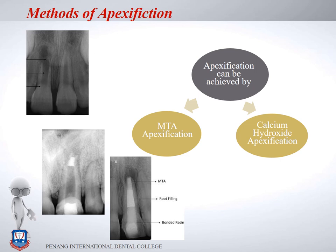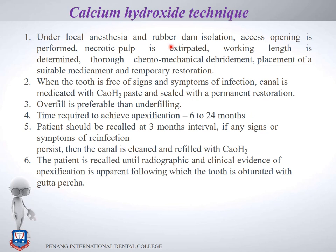There are two ways of inducing a calcific barrier: MTA apexification and calcium hydroxide apexification. For the calcium hydroxide technique, following case selection, local anesthesia, and rubber dam placement, all necrotic pulp is gently removed from the root canal. Working length is determined and chemo-mechanical debridement is performed — the objective is to remove all necrotic tissue and achieve chemical disinfection of the canals, not traditional cleaning and shaping.